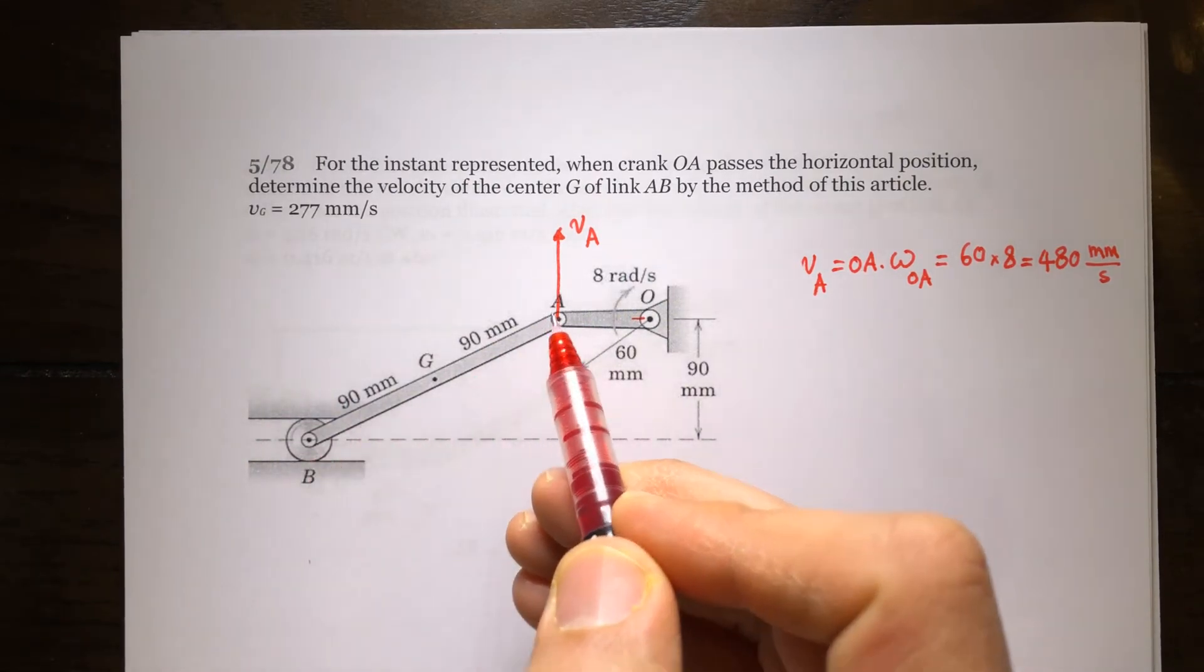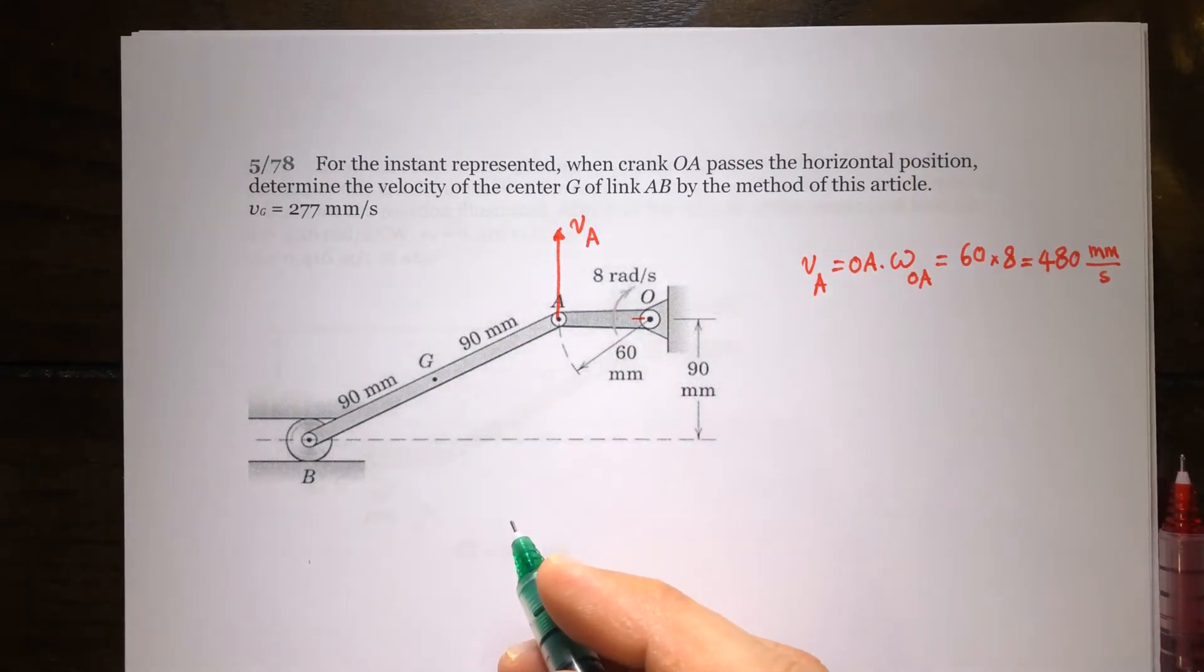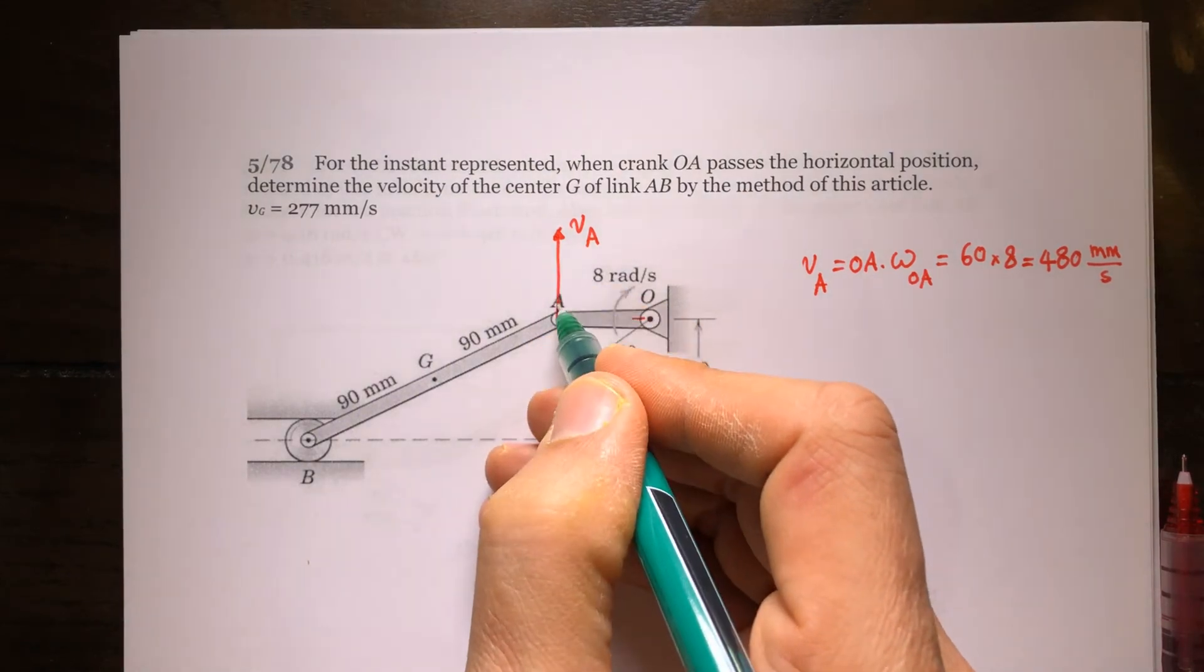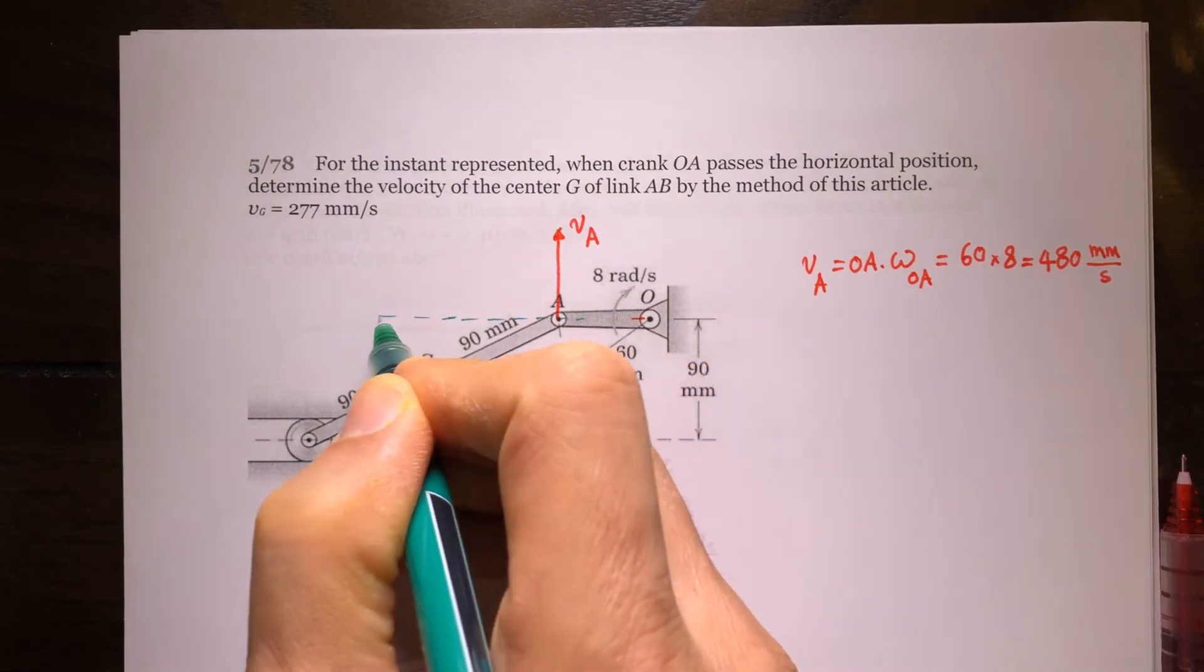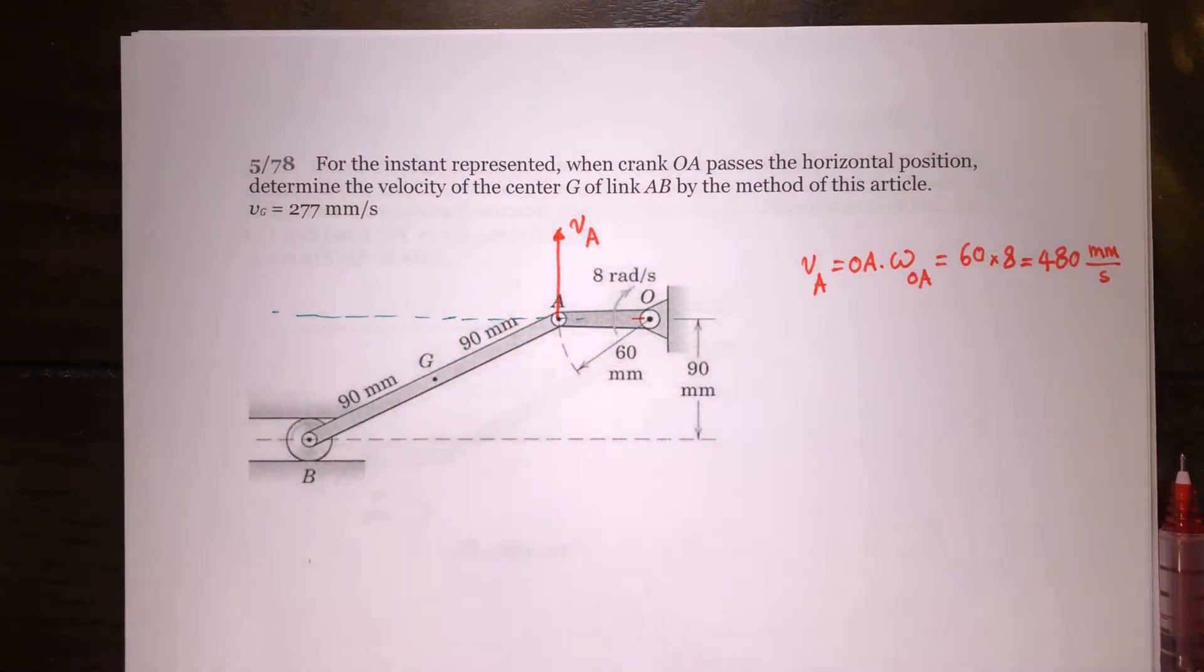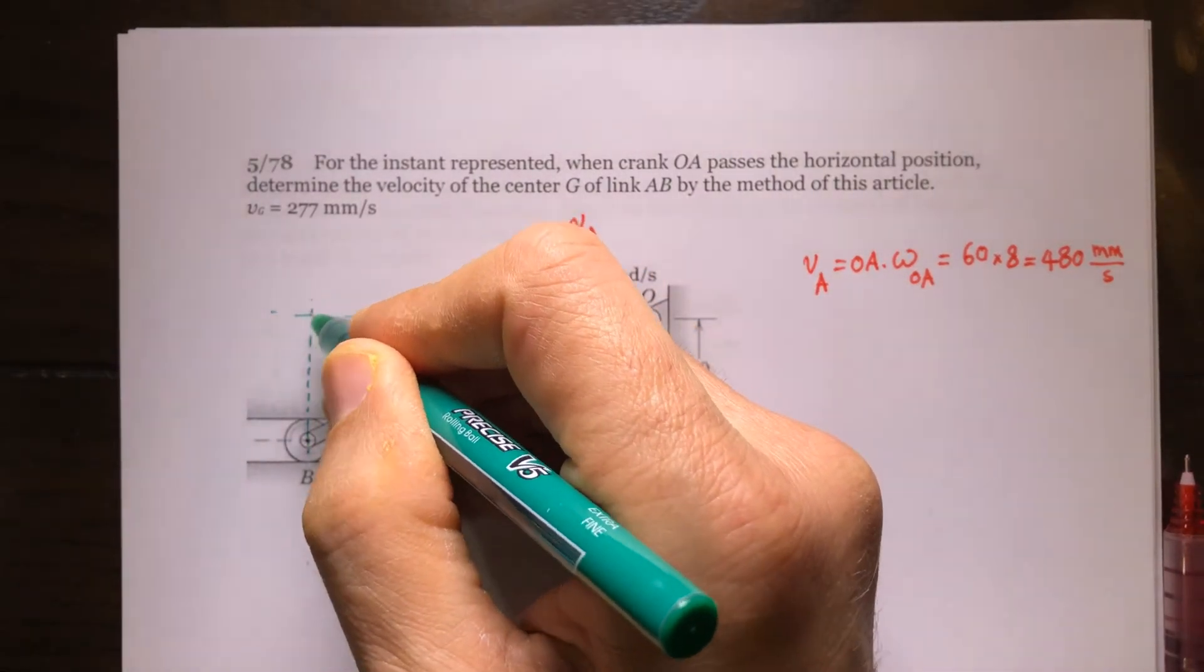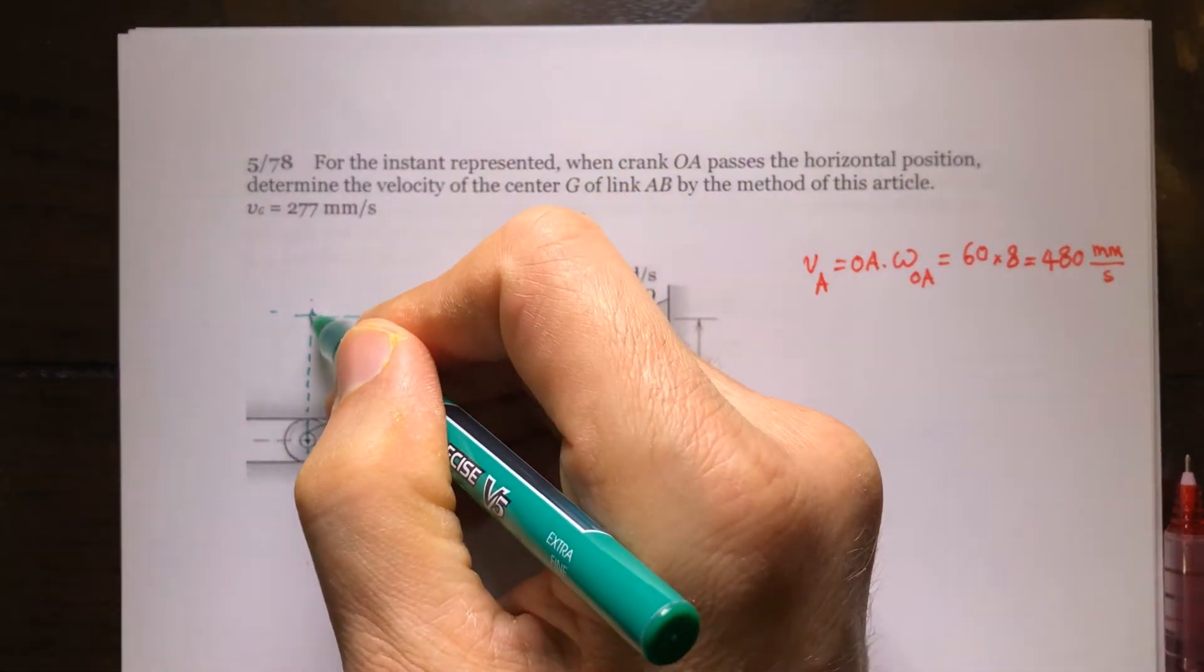Now look at this rigid body. I know the direction of velocity of two points on it. So if I draw perpendicular lines to these velocities, I'm going to be able to find the instantaneous center. The perpendicular line to velocity of A is simply a horizontal line, and velocity of B is in the horizontal direction, so the perpendicular line to it will be just a vertical line. These two lines are crossing each other at this point.